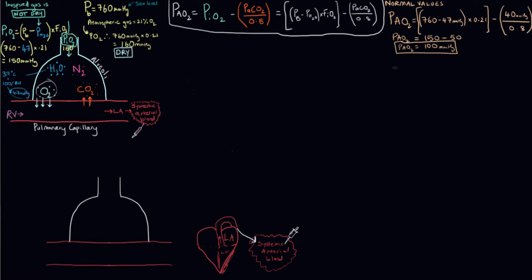Let's track how the partial pressure of oxygen changes as it goes from the atmosphere into the arterial blood. In the atmosphere, the partial pressure is the fractional concentration of that gas times the total pressure. At sea level, the partial pressure of oxygen in dry gas is 160.